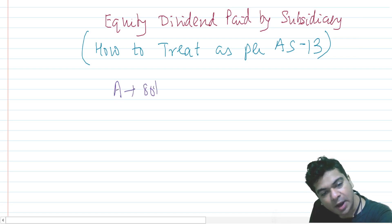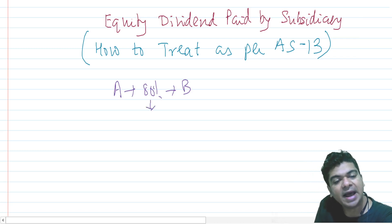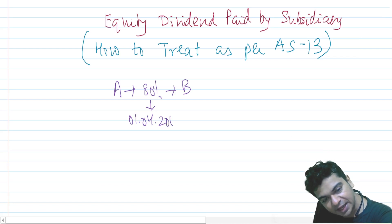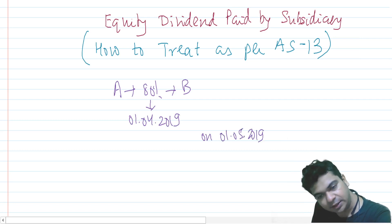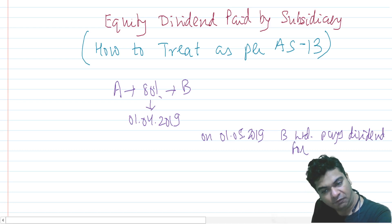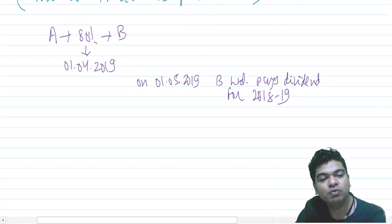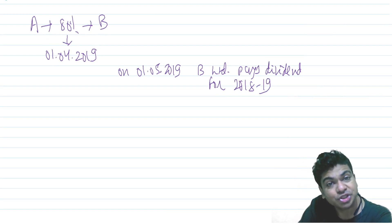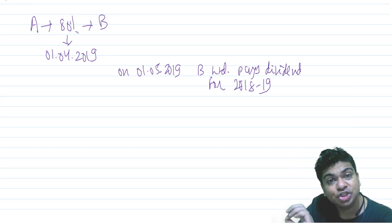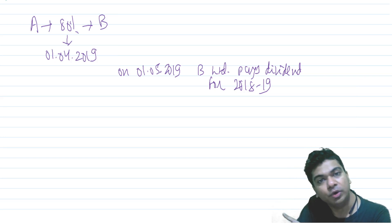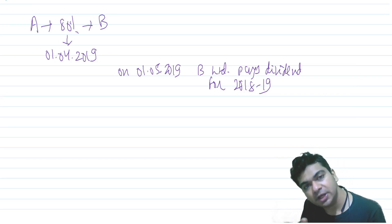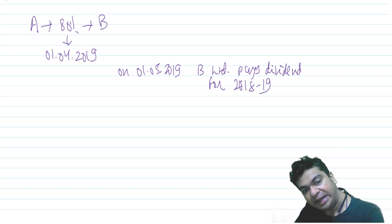Let us understand this with reference to consolidation. Let's say Company A has acquired 80% shares of Company B on 1st April 2019. Then on 1st May 2019, B Limited pays dividend for the year 2018-19. We want to know how this dividend will be treated. We have a parent-subsidiary relationship, but remember the 80% shares you are buying is ultimately an investment — investment accounting will be governed by AS 13, not AS 21.